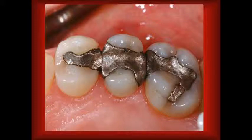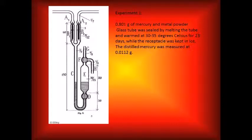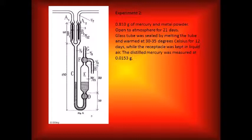He also found a dangerous source of mercury poisoning in amalgam tooth fillings. He performed the following four experiments. In the first experiment, he took an evacuated glass tube, bent at a 90 degree angle in the middle, and put 0.801 grams of mercury and metal powder, which is an amalgam piece. The glass tube was sealed by melting the tube and warmed at 30 to 35 degrees Celsius for 23 days, while the receptacle was kept in ice. The distilled mercury at the end of the experiment was measured at 0.0112 grams.